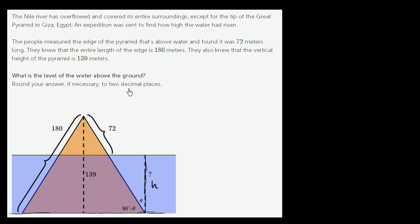Round your answer if necessary to two decimal places. They've labeled this little angle here theta, and this is a right angle. So this angle here at the base of the pyramid is going to be the complement of theta, 90 degrees minus theta. Using that information, we can also figure out that this angle up here is also going to be theta.